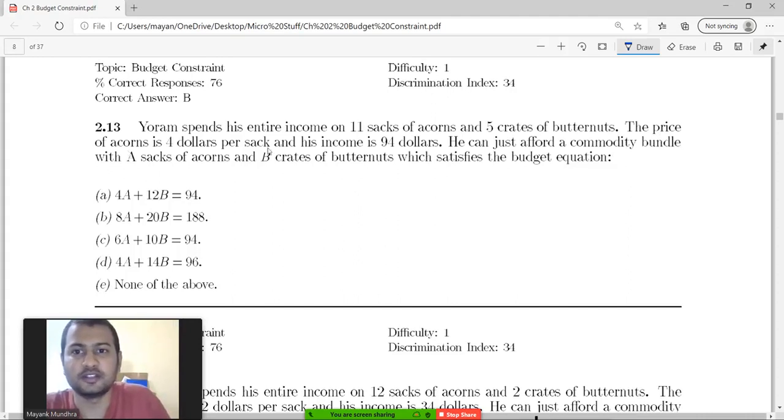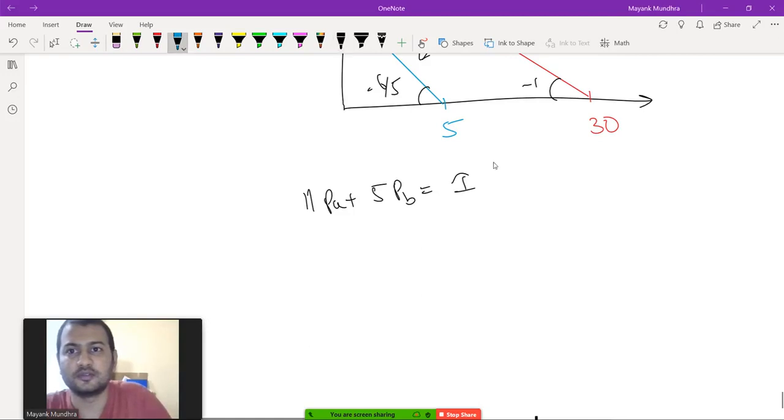The price of acorn is 4 dollars per sack and his income is 94. So 44 plus 5PB equals 94, which implies PB should be equal to 10.